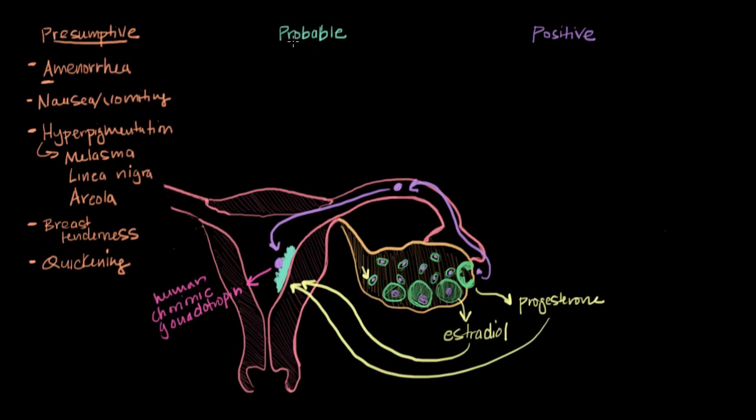So what about the probable signs of pregnancy? Well, first there's uterine enlargement. So if the examiner feels an enlarged uterus, that's a pretty big clue that the woman might be pregnant. And of course, a positive pregnancy test is another big sign.